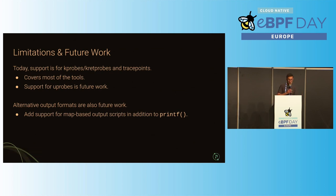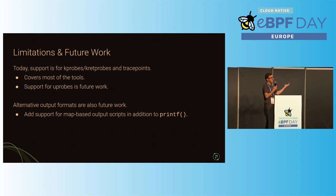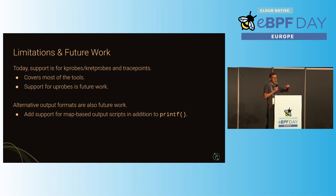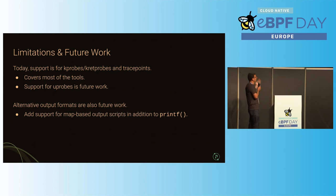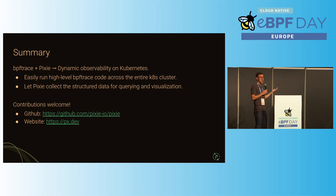To bring this all together — the state of this project: we've got the basic stuff working as you saw in the demos. But there is future work. Right now we only support kprobes and trace points; uprobes are future work. Also, because we force everything into a structured table, you can't have random printfs all over the place — multiple printfs should all output to a single table with the same number of columns. These are things we're looking to change to better support aggregation-style scripts. Contributions are welcome if anyone wants to participate.